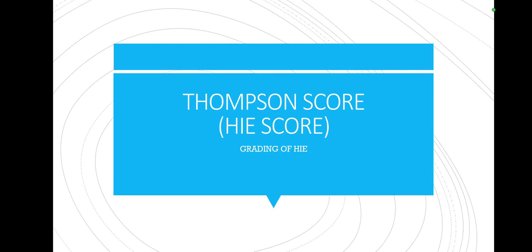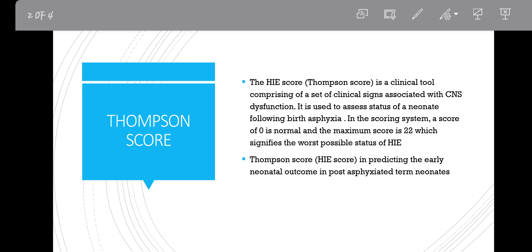Hello everyone, today we'll be talking about the Thompson score, which is also known as the HIE score. This score is used to grade HIE, which is hypoxic ischemic encephalopathy. The HIE score is a clinical tool comprising a set of clinical signs associated with CNS dysfunction. It is used to assess the status of a neonate following birth asphyxia.